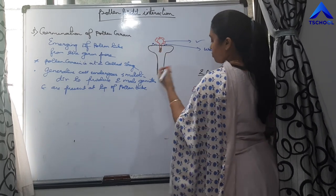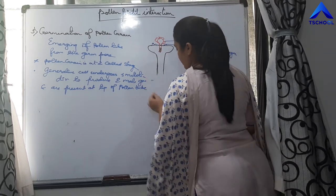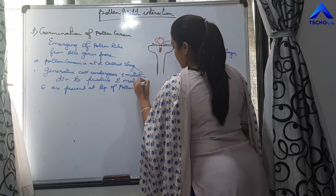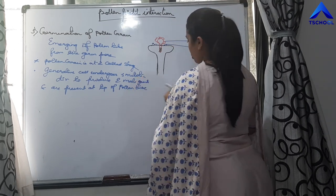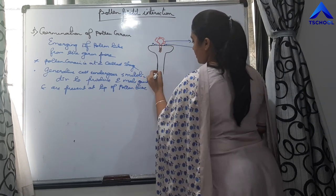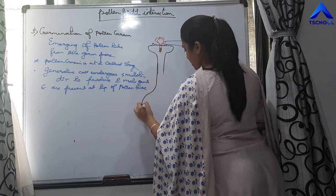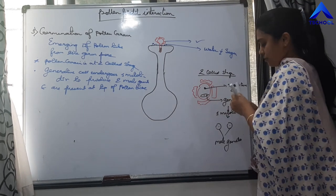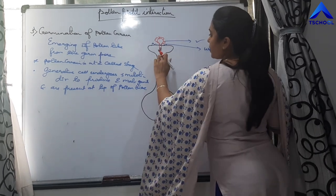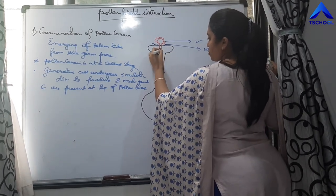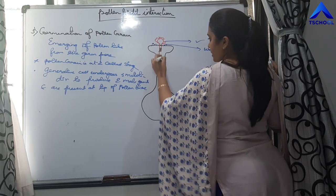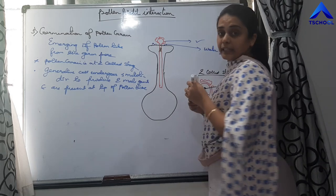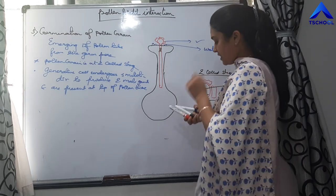Now, this pollen tube will elongate. We will draw the entire structure. This is the ovary. The pollen tube is going to elongate and it is going to enter, crossing the entire portion of the style.